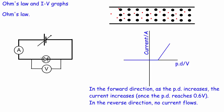For a diode, the IV graph will be familiar from GCSE. In the forward direction, where the readings are positive, nothing happens for small potential differences, but once you reach about 0.6 volts a current starts to flow. In the opposite direction you get no current whatsoever because the resistance is really, really big. On the forward side the resistance is large initially, then the diode switches on, allowing current to flow, and as potential difference increases the current increases too.